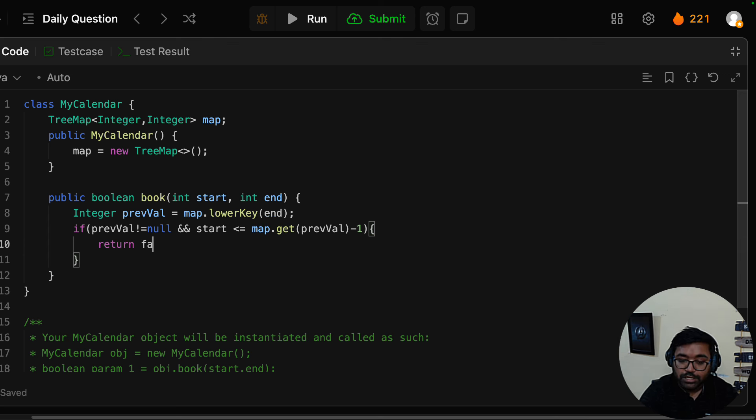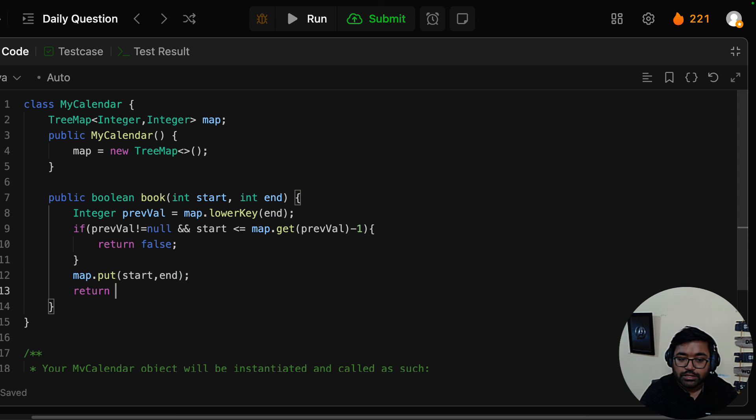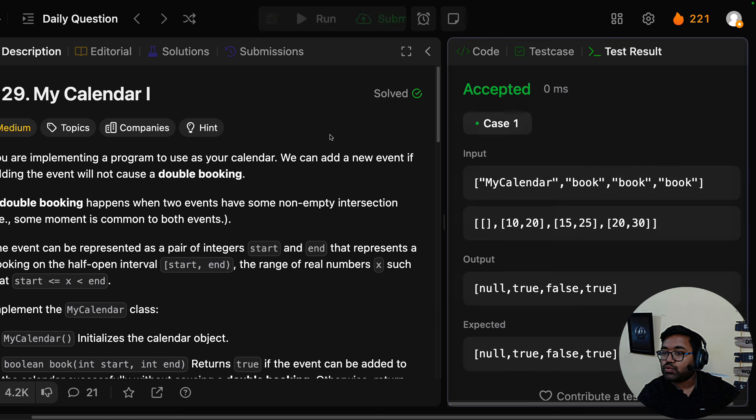Otherwise, map.put start as key and end as value, and return true. That's it, let's run it. Hopefully it will work and it did. Now let's try to submit it, and almost 82 percent fast.